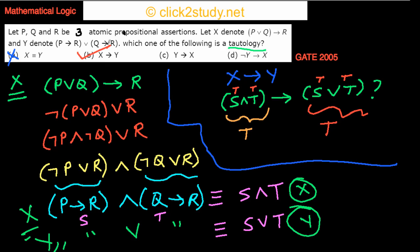The other options are clearly not true — you cannot derive X from Y, and you cannot derive Y from X in the reverse direction. We also know X is not equivalent to Y, which eliminates equivalence options. Since X implies Y, by contrapositive not Y implies not X, so only option B — X implies Y — is correct.